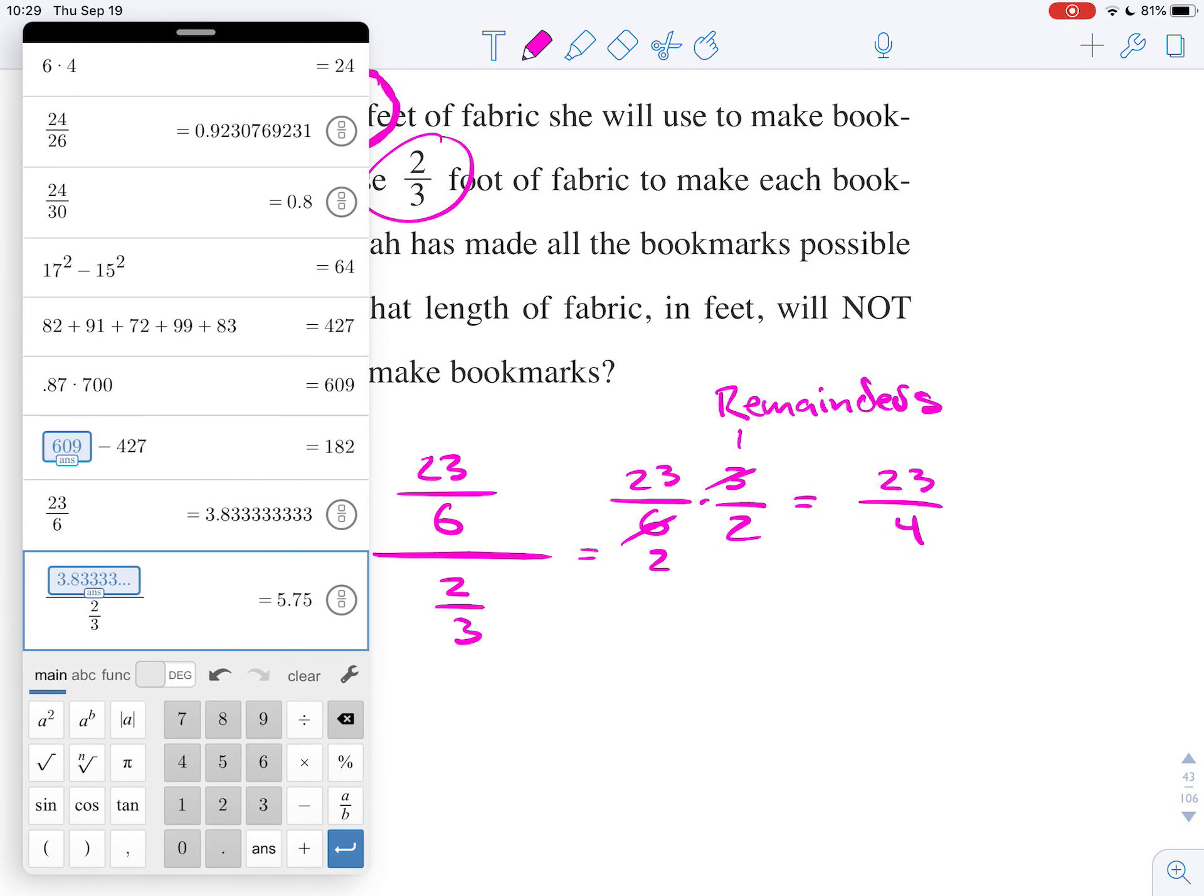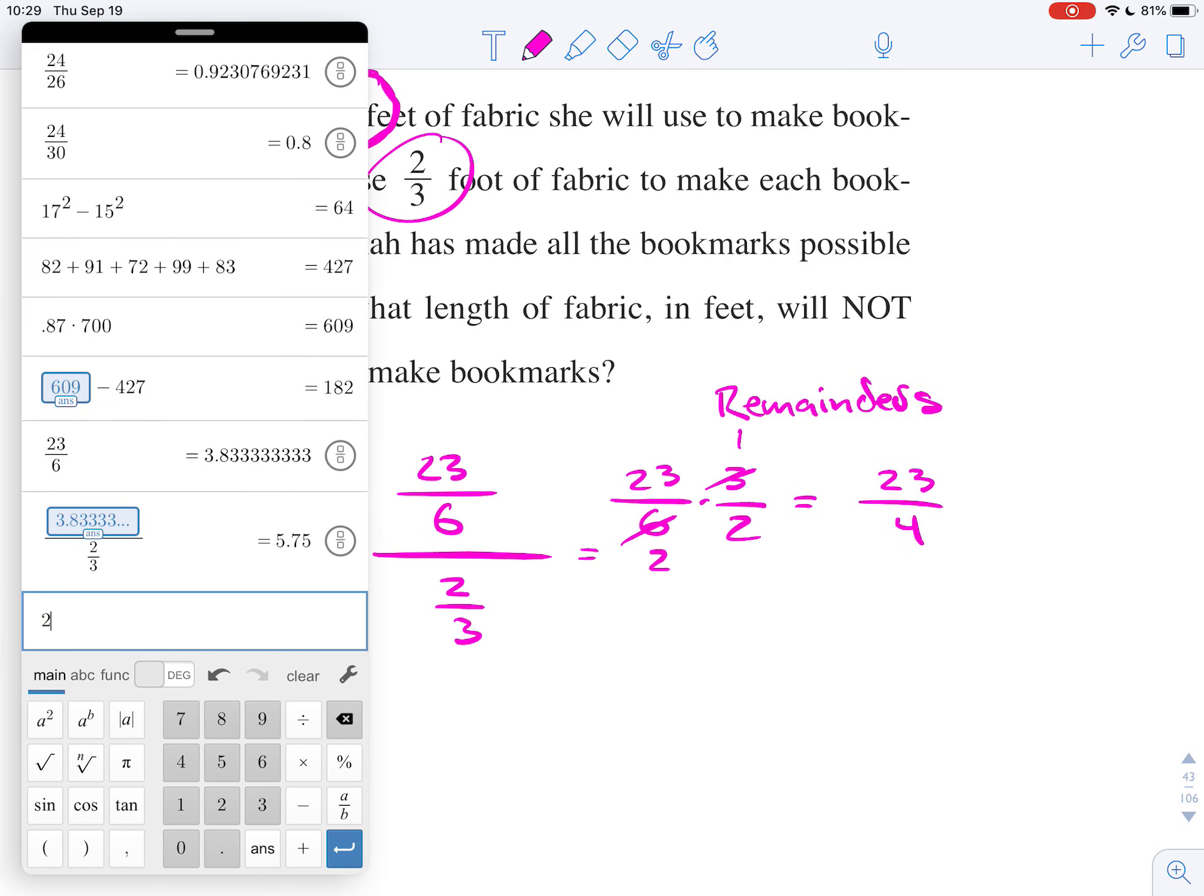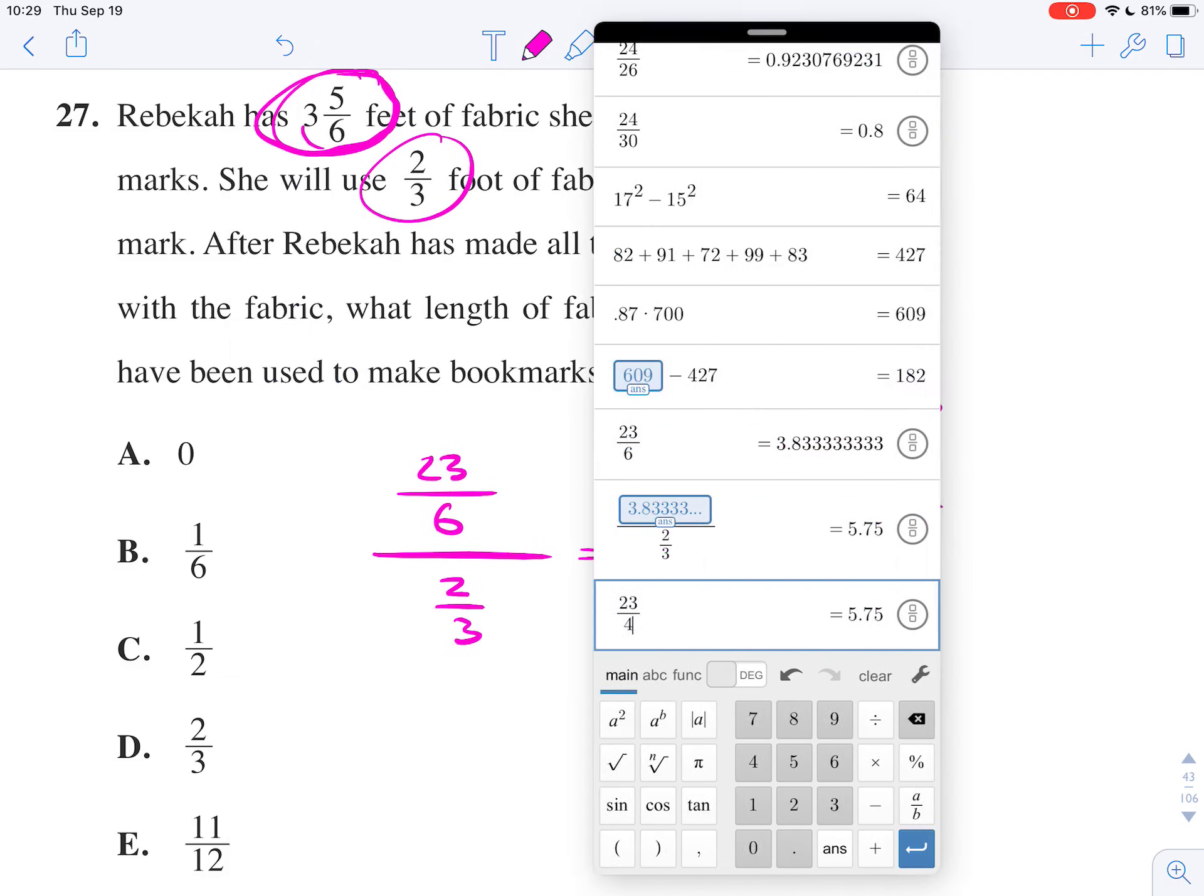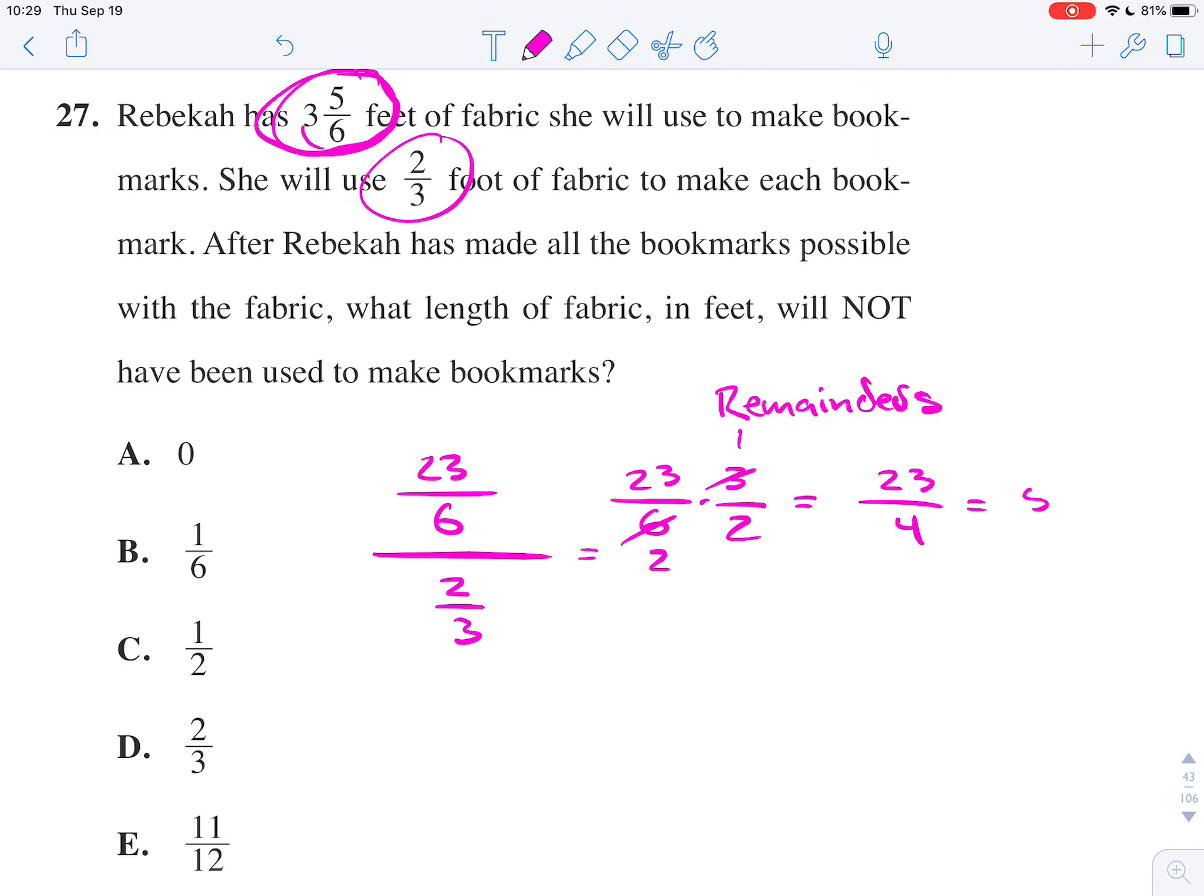And so, if we do 23 divided by 4, we get 5.75. Okay, 5.75.